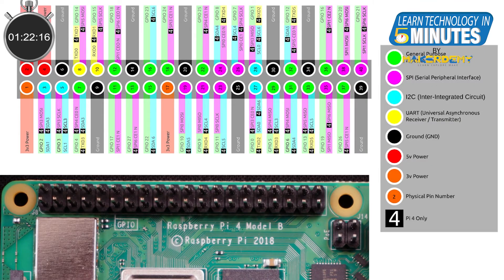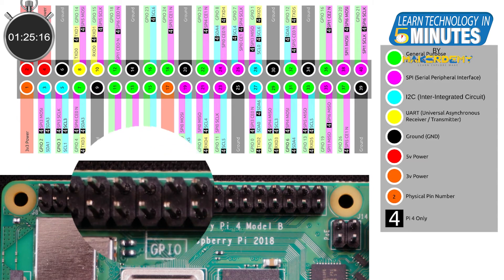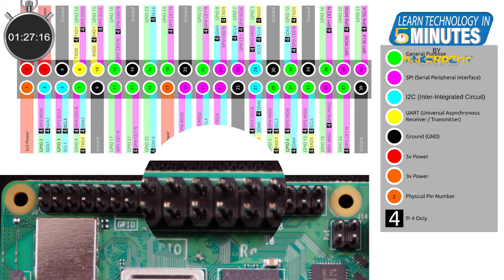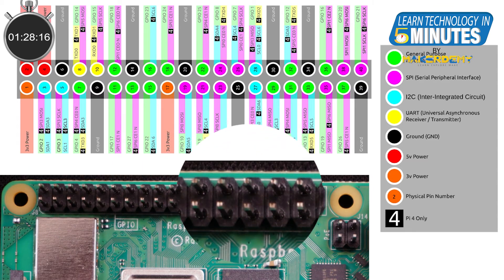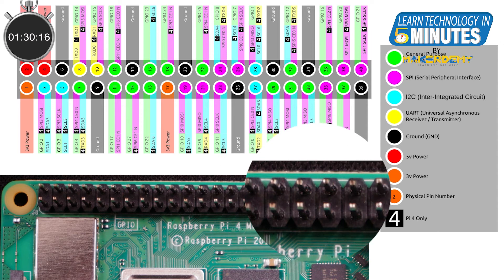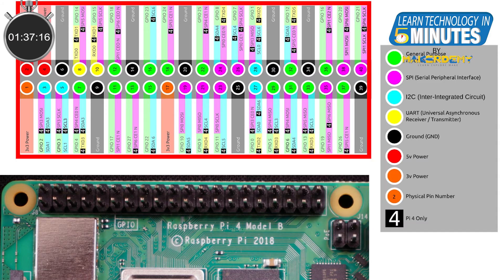To do physical computing on the Raspberry Pi 4, the creators have provided pins on the top edge of the Pi 4. This is the most powerful feature of the Raspberry Pi 4. These pins are called General Purpose Input-Output pins, or GPIO in short. The GPIO pins are a physical gateway between the Pi 4 and the outside world, and understanding the functions of these pins is crucial for anyone working with the Raspberry Pi 4.